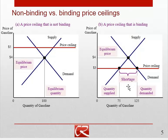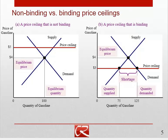The shortage comes from both sides — and that's not something people typically think of. If people think of price ceilings causing shortages, they think mainly of sellers taking their ball and going home. But it's also the fact that more buyers are brought into the market. Buyers like low prices, so consumer surplus is higher when prices are lower. Sellers don't like low prices — producer surplus is driven down by the price ceiling. So one way of looking at price ceilings is as a form of redistribution, transferring resources from producers to consumers.